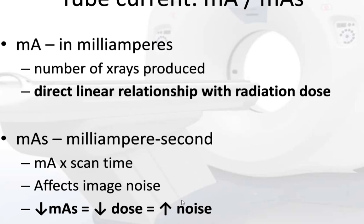We will start with tube current, or MA or MAS. MA is measured in milliamps. It is the number of X-rays produced and has a direct linear relationship with radiation dose. MAS is MA times scan time. It affects image noise, so if we decrease MAS, we will decrease the dose and increase the noise.